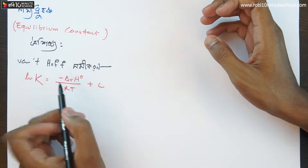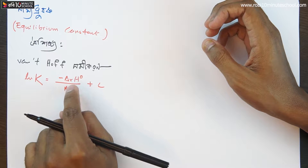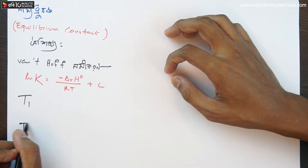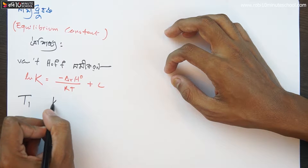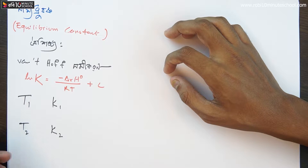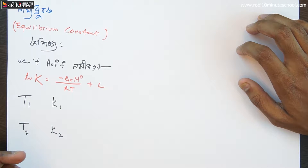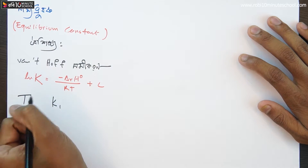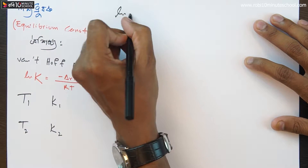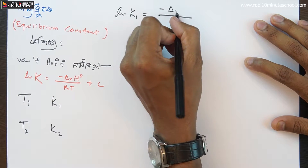So, delta H0 is the delta H0. Here is the delta H. I am doing T1 and T2. T1 — at temperature T1, at constant rate, the rate constant is k1, and T2 — at temperature T2, at constant rate, the rate constant is k2. If we put both values into the equation, then we get: logarithm of k1 equals negative delta H...